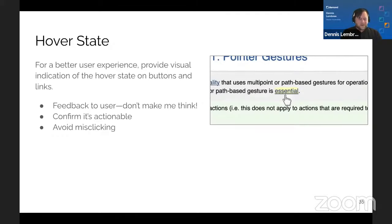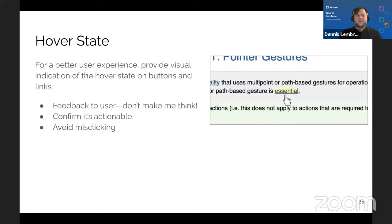Hover state: another often-neglected technique. For a better user experience, provide a visual indication of the hover state on buttons and links. It gives feedback to the user — basic usability, 'Don't Make Me Think.' The hover state helps the user visually confirm something is actionable and helps avoid miss-clicking.